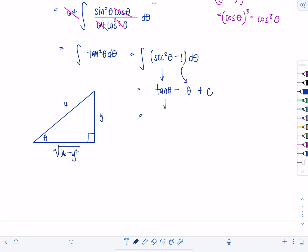So that means tangent of theta, tangent of this angle is going to be opposite over adjacent. So I can replace it with y over square root of 16 minus y squared minus what was theta? Well, since we let y equal 4 sine theta and y over 4 is sine theta, I can just say theta by itself is sine inverse of y over 4.